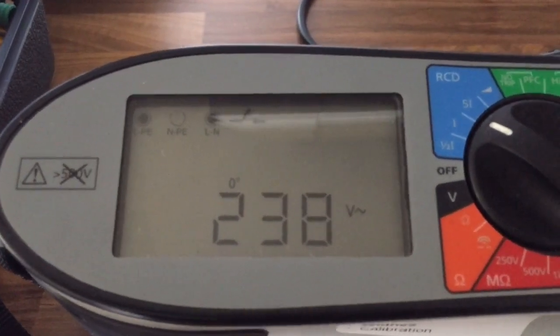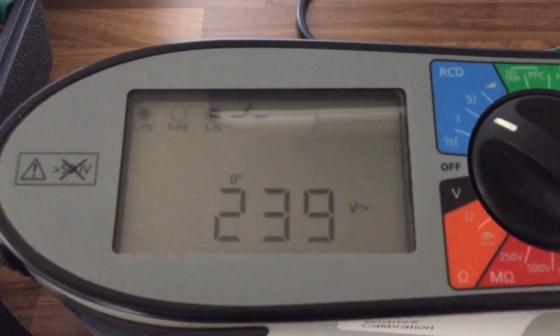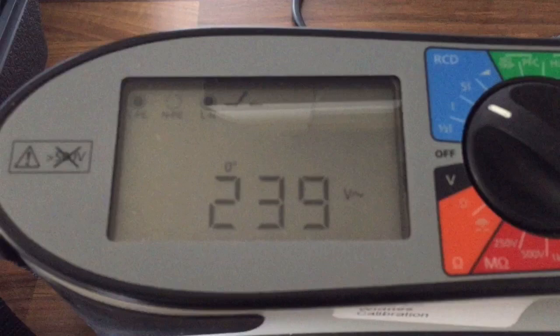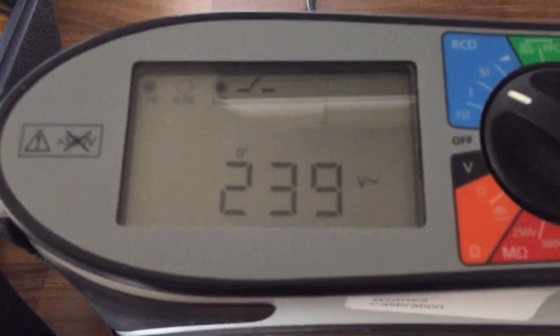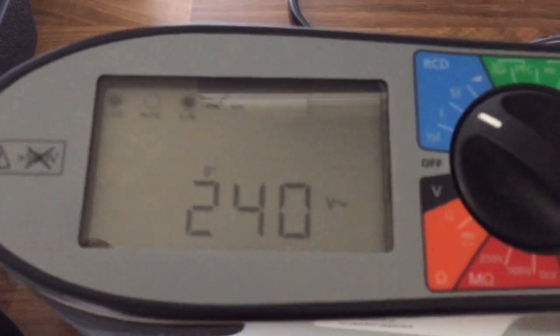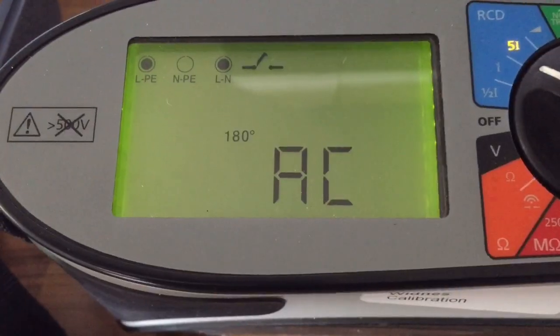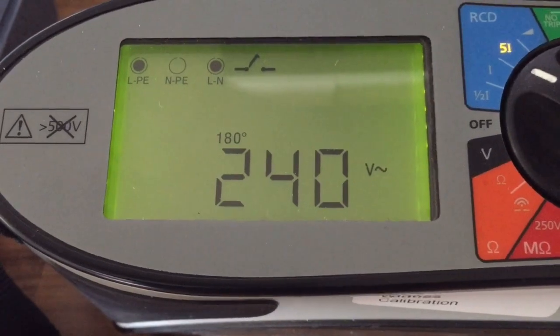For the one times and the five times test, we're doing them both on zero and 180. We take the worst case scenario, so effectively the highest value that we get. On this meter to cycle between the zero and 180, we just press this blue button, and that gives us our 180 starting point.